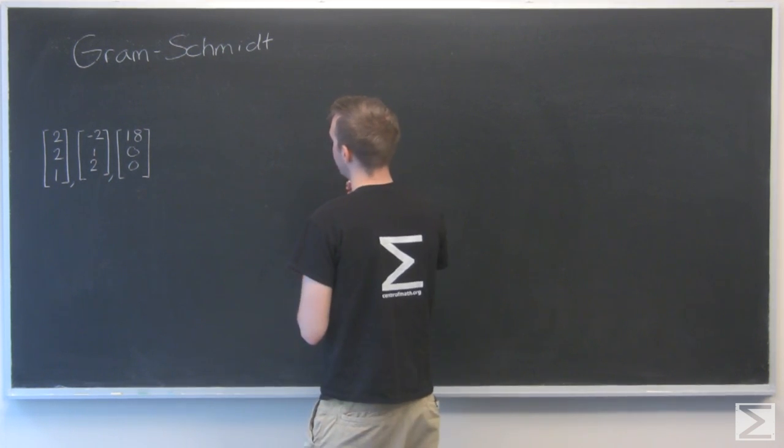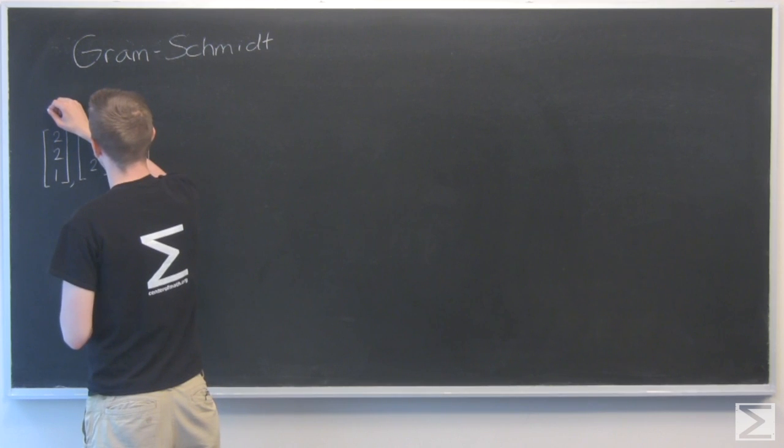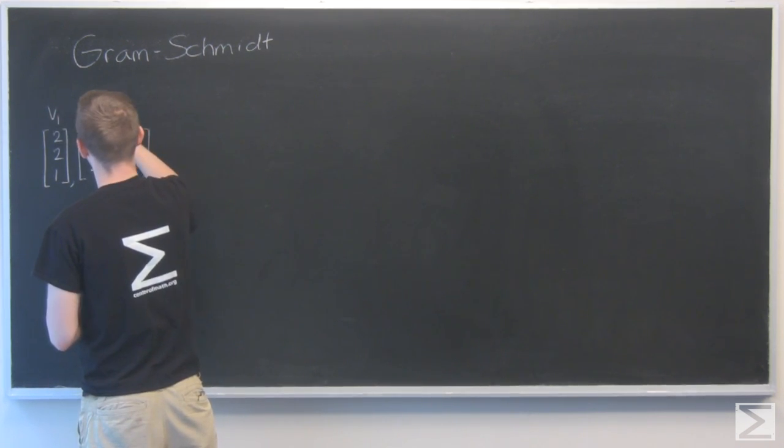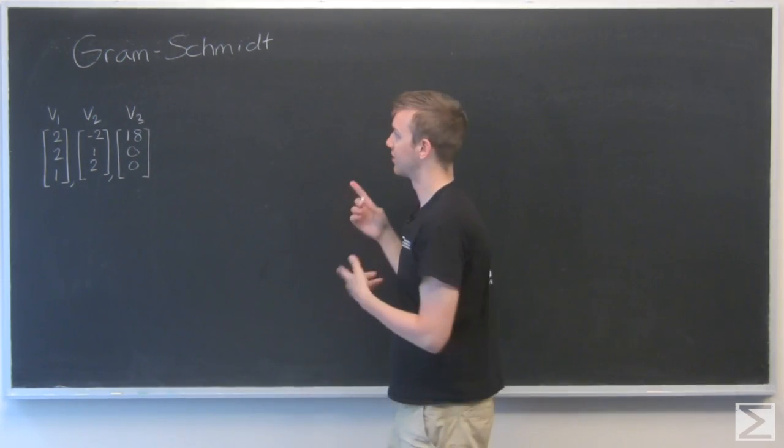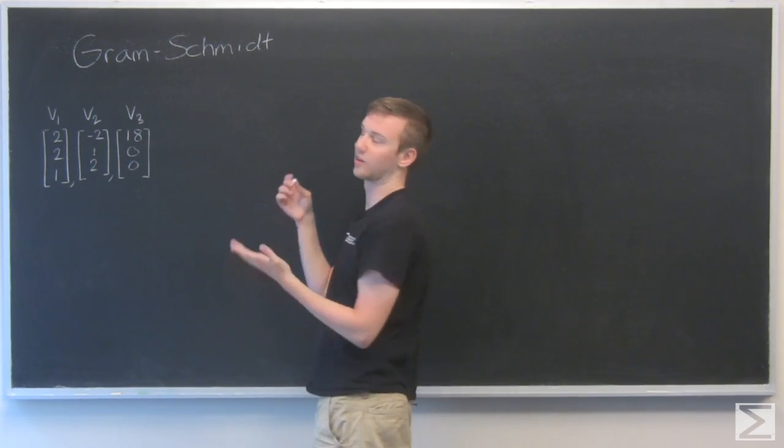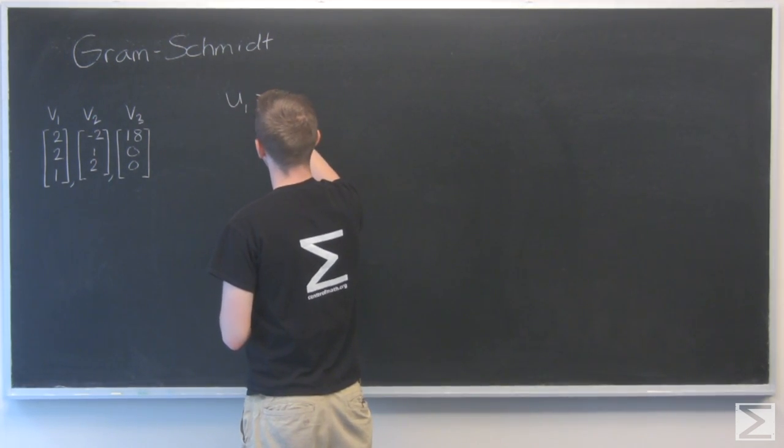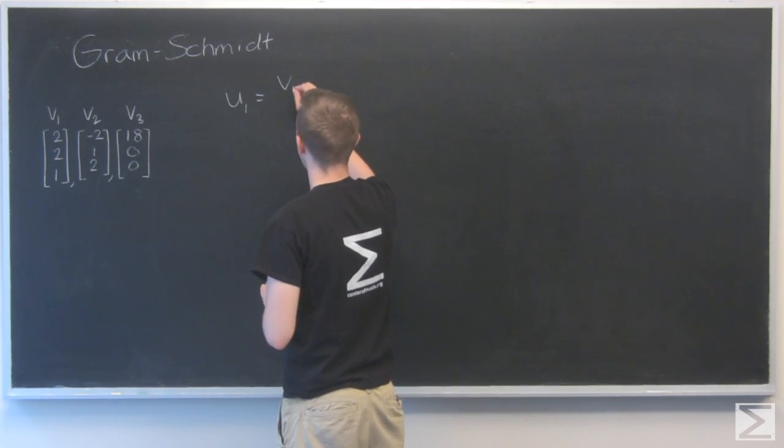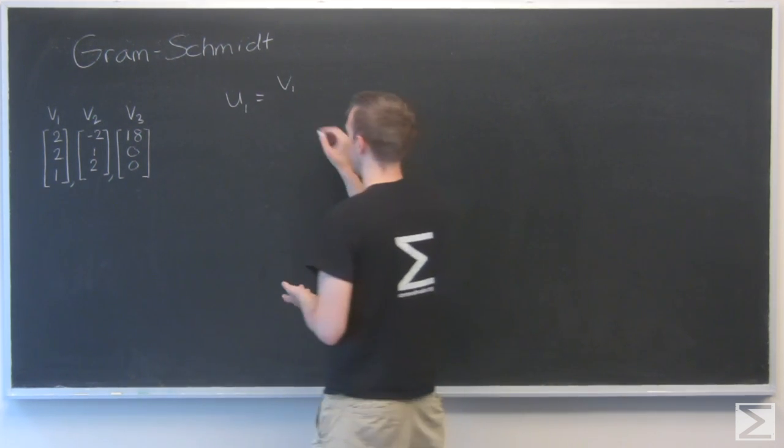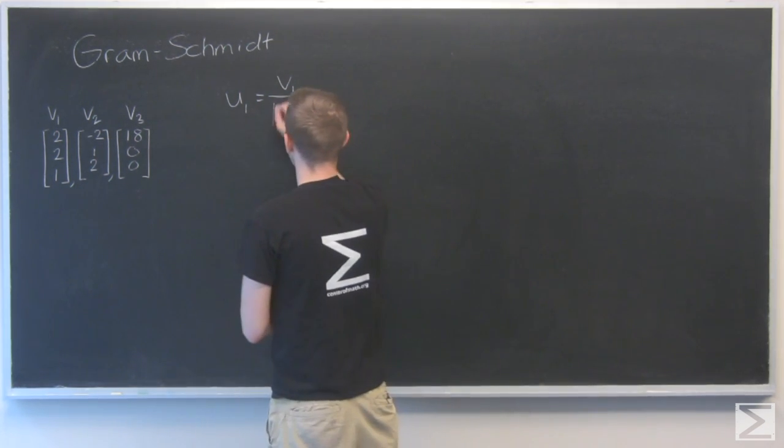To get our first vector we start with, I'm going to label these V1, V2, and V3. And what we're trying to get is our orthonormal basis. I'm going to call them U1, U2, and U3. So U1 is just going to be V1. That's the one we're starting with. And if you remember in my drawing, I didn't change that one at all. But we just need to shorten it down to unit vector size. So divided by its length.